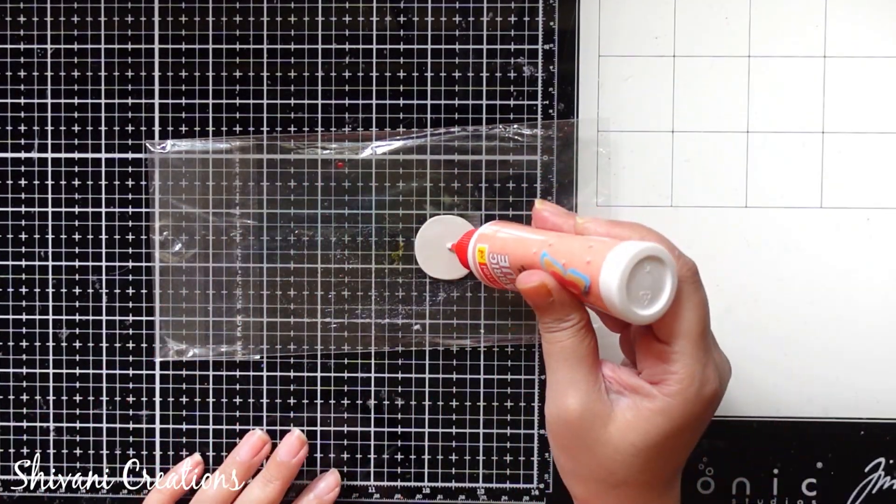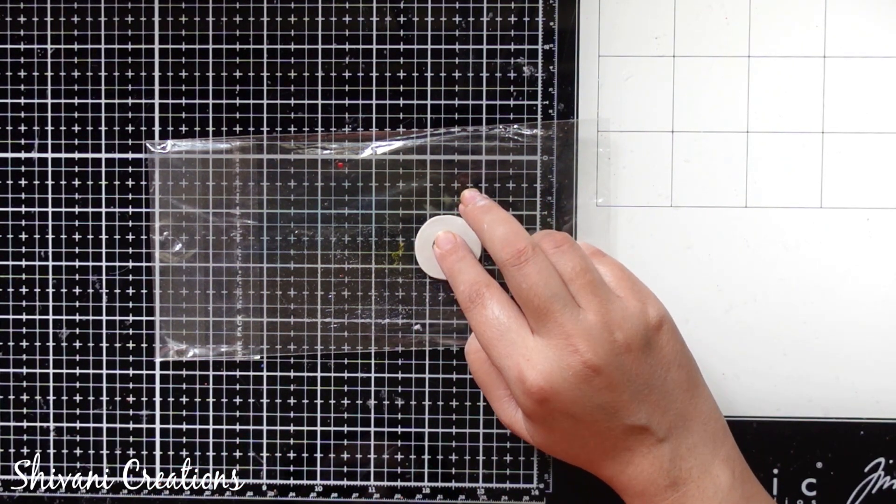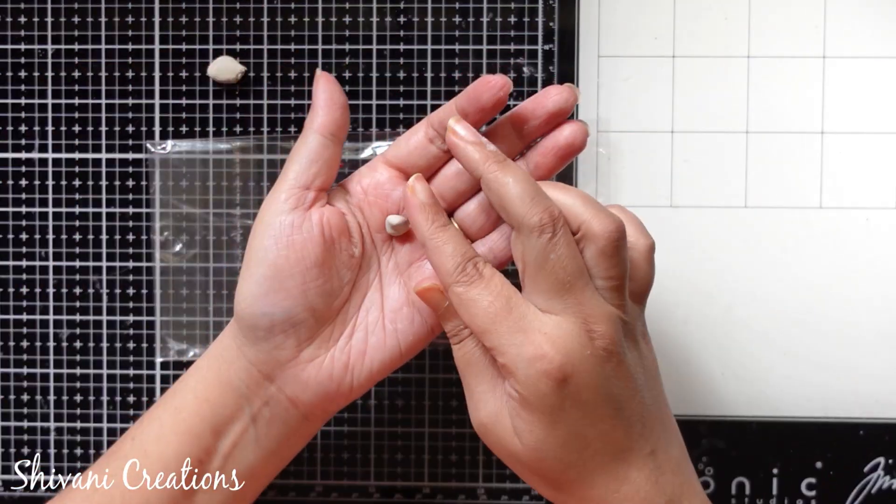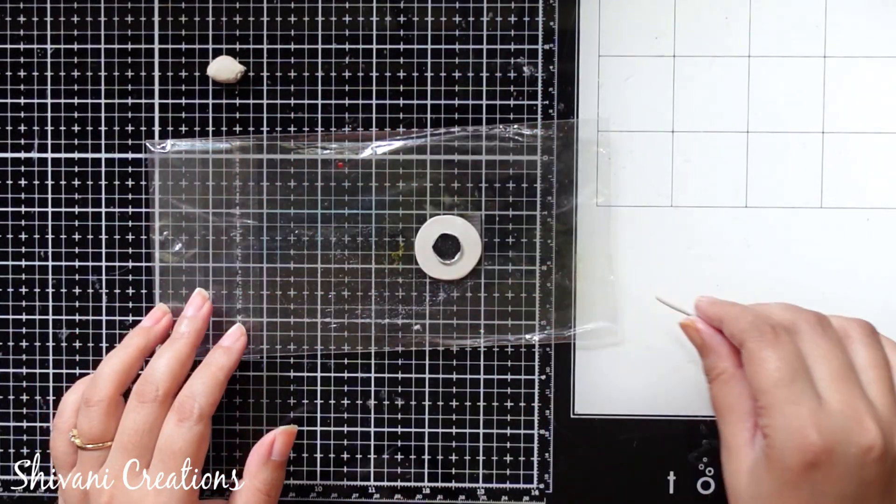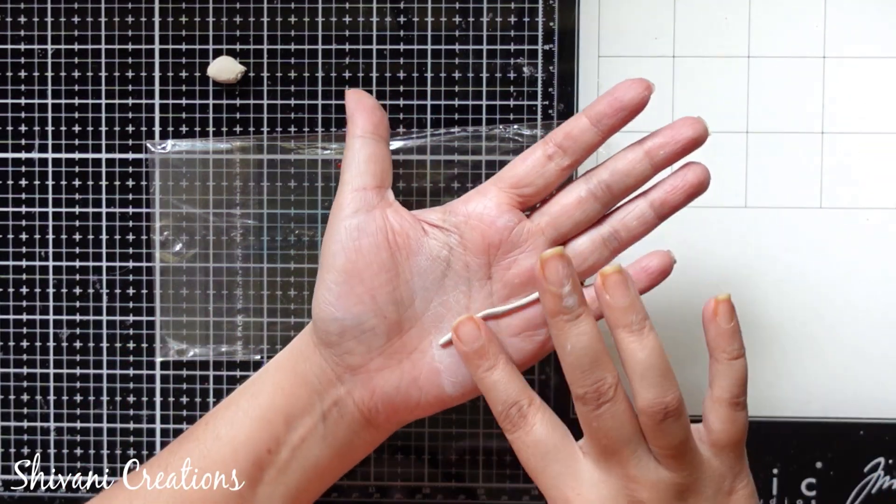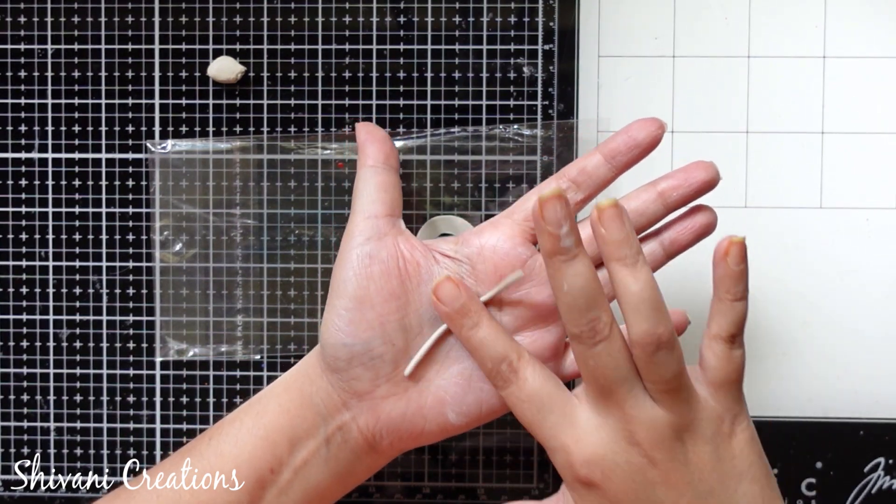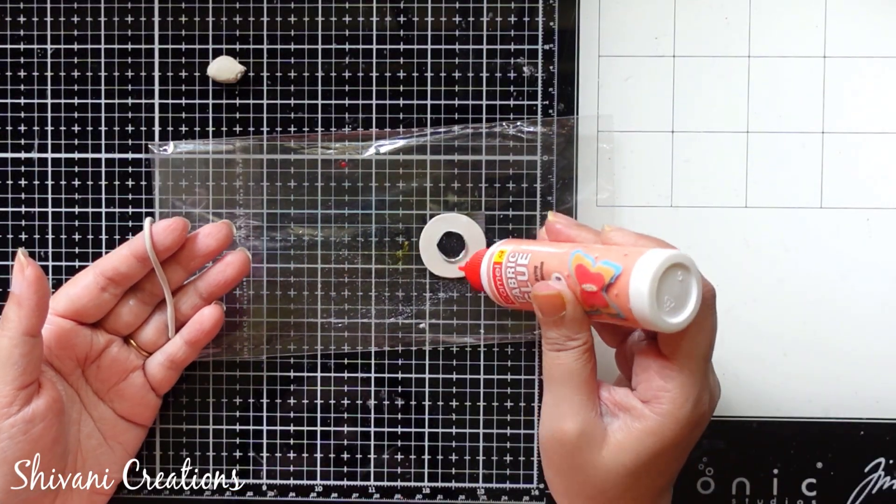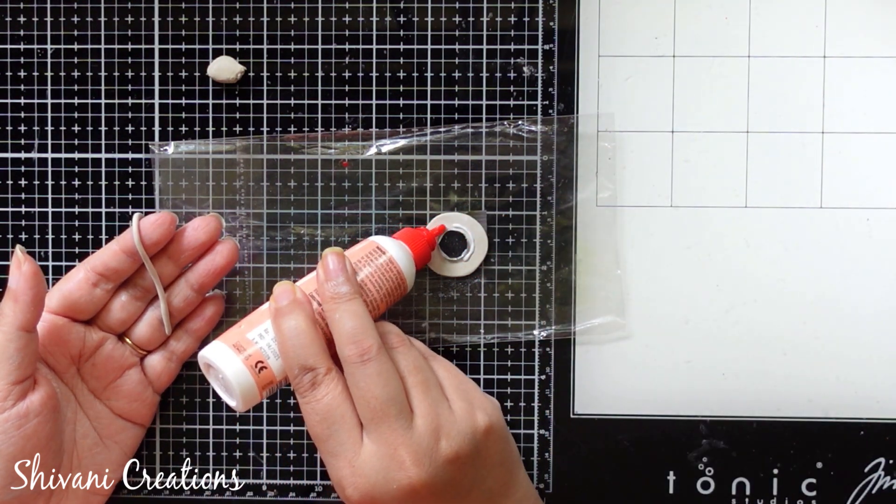Exactly in the center I am sticking one circle mirror like this. Then taking a little bit more clay and making a long pipe. Then I am just adhering this pipe around the mirror.